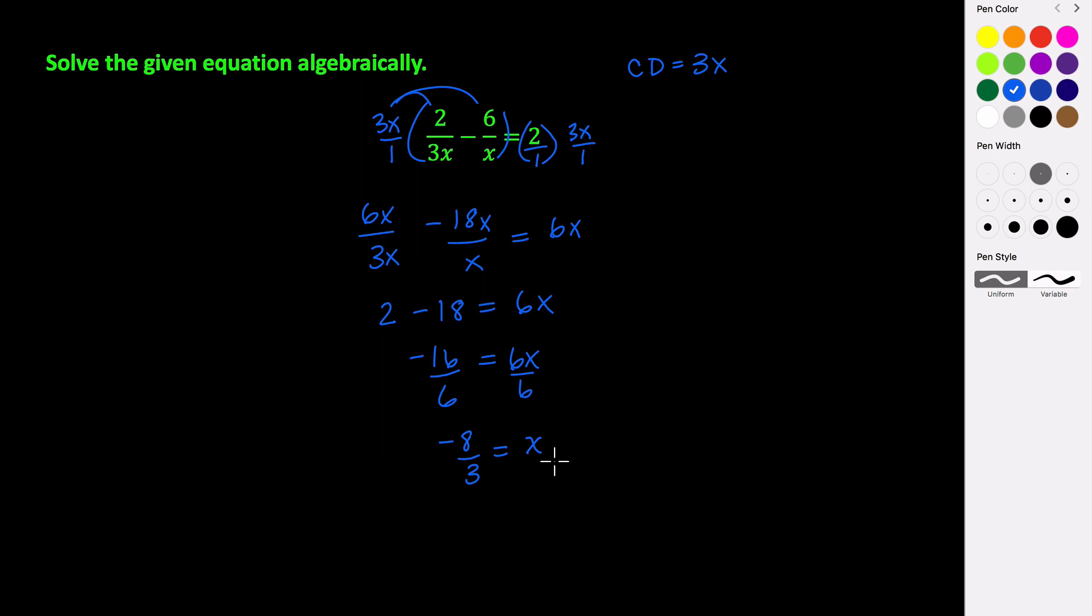Now, really for all of your equations, you really should check your solutions. Because a solution is only a valid solution if it's in the domain of your function. And we know that for this, we can't have 0 in our denominator. So if your value turned out to be something that would make your denominator 0, it would not be a valid solution. It would be something called an extraneous solution. But negative 8 thirds is not going to make either of these denominators 0, so it is a valid solution.